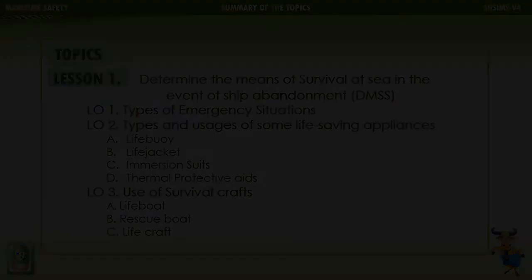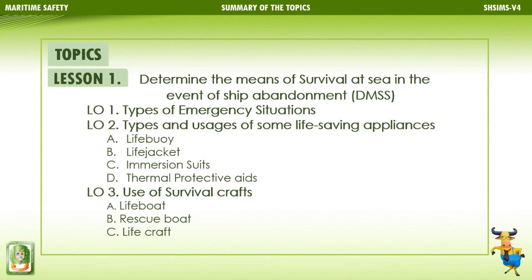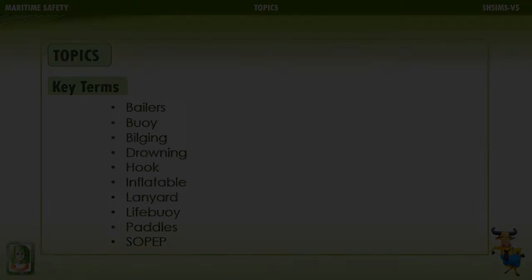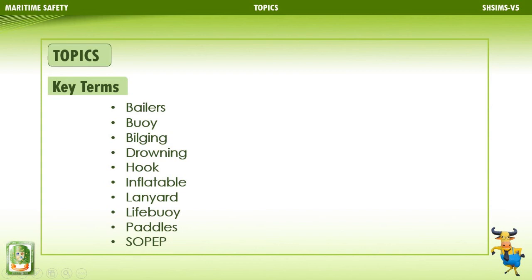Topics: Lesson 1 - Determine the means of survival at sea in the event of ship abandonment. L01: Types of emergency situations. L02: Times and usages of some life-saving appliances, including life buoy, life jacket, immersion suits, and thermal protective aids. L03: Use of survival crafts - lifeboat, rescue boat, and life raft.